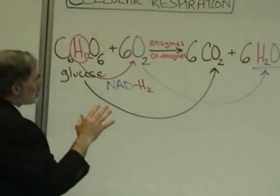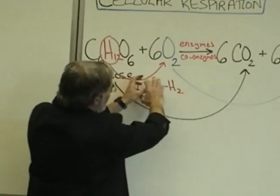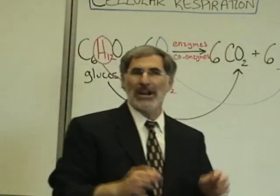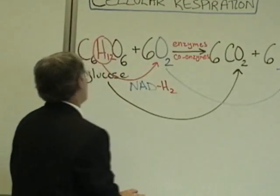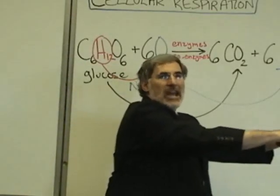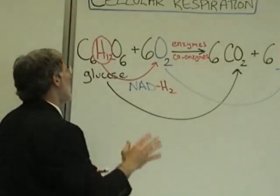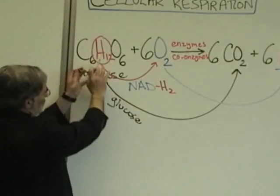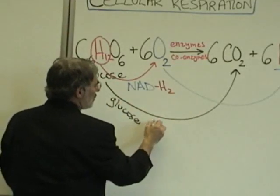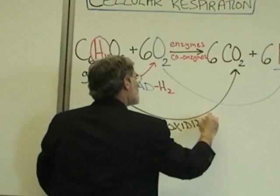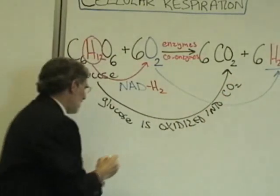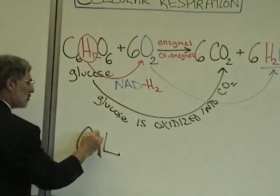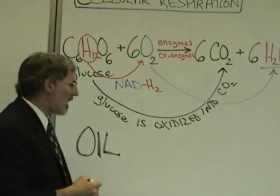There is a name for this process of transferring hydrogen atoms and electrons from one molecule to another: these are called oxidation-reduction chemical reactions. Whenever a molecule loses hydrogen atoms and electrons, we say it has become oxidized. So glucose, since hydrogen atoms are being removed from it, is oxidized — oxidized into carbon dioxide. Just remember OIL: Oxidation Is a Loss of hydrogen atoms and electrons.